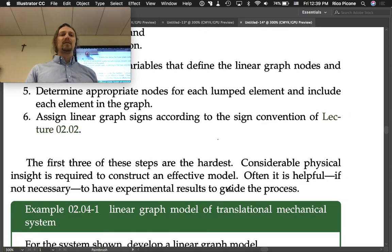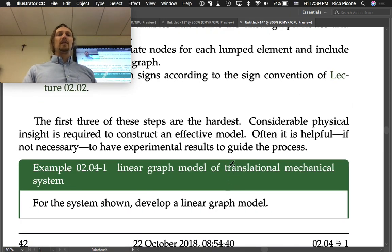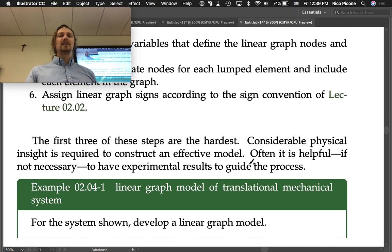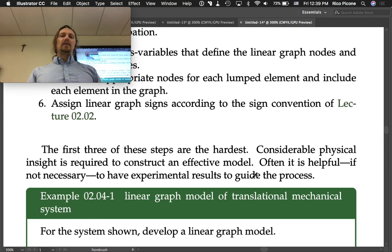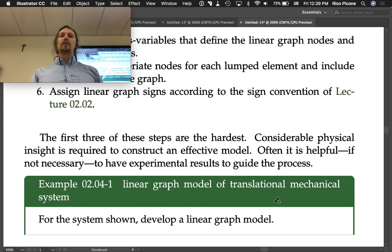The first three of these steps are the hardest. Considerable physical insight is required to construct an effective model. Often it's helpful, if not necessary, to have experimental results to guide the process. How do you decide what your lumped parameters are? Sometimes you have to do some tests before you can really get a feel for it.